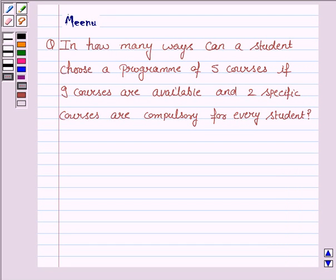Hello and welcome to the session. Let's discuss the following question. In how many ways can a student choose a program of 5 courses if 9 courses are available and 2 specific courses are compulsory for every student? To solve this question,